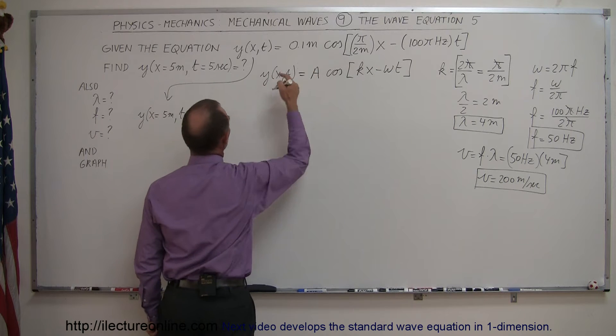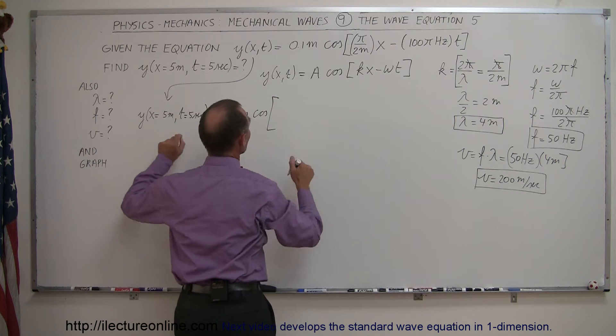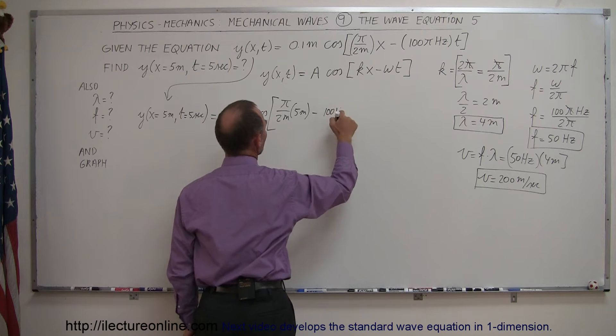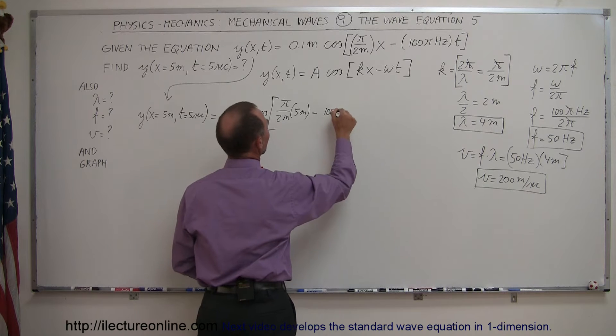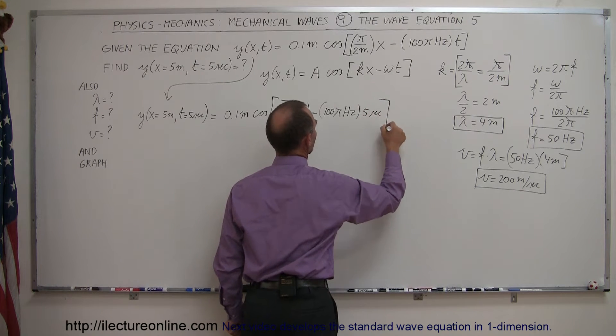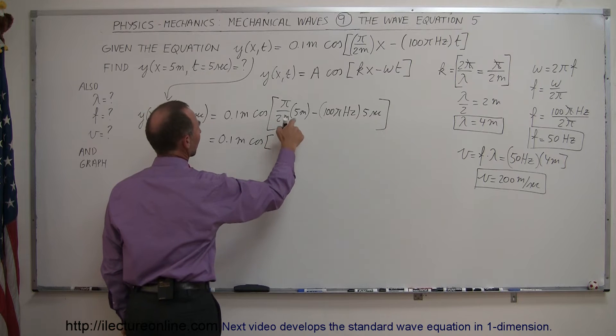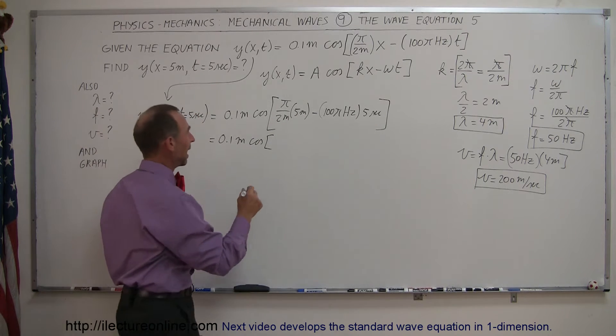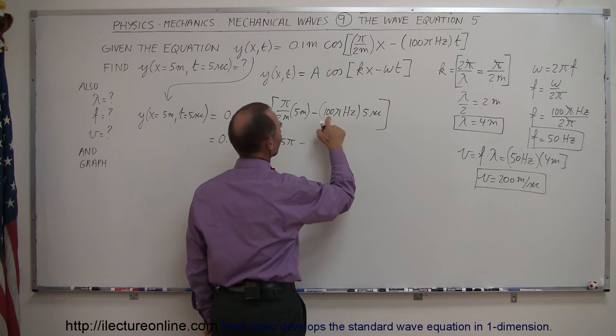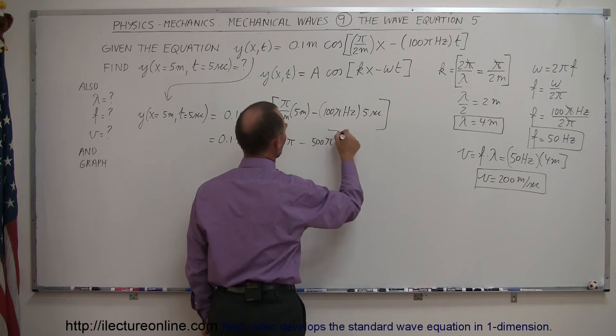We're going to plug these values into our equation. So y when x equals 5 meters and t equals 5 seconds equals 0.1 meters times the cosine of π/2 meters times 5 meters minus 100π hertz times 5 seconds. This equals 0.1 meters times the cosine of 2.5π minus 500π. The units cancel out.